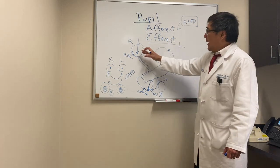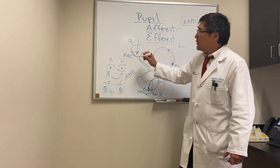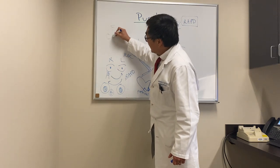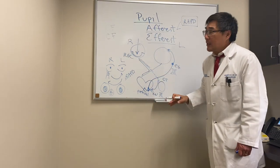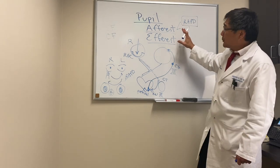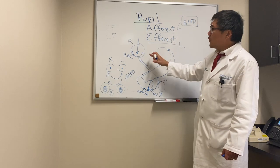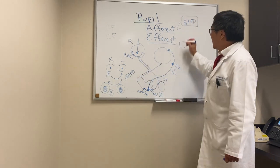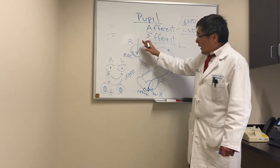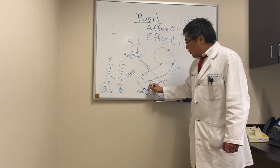What if you have bilateral involvement of both eyes equally? For example, both eyes are count-fingers vision due to an optic neuropathy. In that case we won't have an RAPD because relative to the fellow eye there is no relative difference. In that setting we can use the near reaction — that is, light-near dissociation — where the light pathway is impaired.